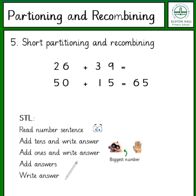We then move on to short partitioning and recombining. The number sentence is 26 plus 39. Let's add the 10s together first, starting with the biggest number. 39 has 3 tens, so 30 in my head. 26 has 2 tens, so 2 tens on my fingers: 30, 40, 50. To add the ones, I look at the bigger number first — 39 has 9 ones in my head, add on 6: 9, 10, 11, 12, 13, 14, 15. Now add these answers: 50 plus 15. So 50 in my head, one 10 on my finger: 60, then add the ones — 61, 62, 63, 64, 65.